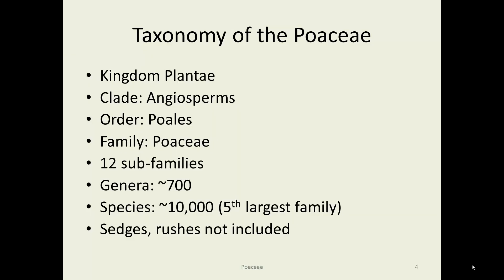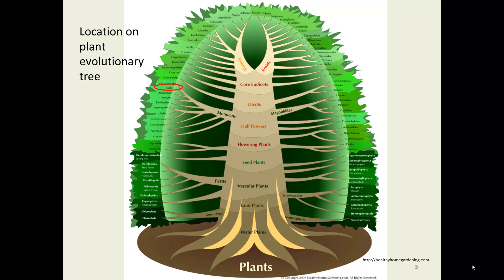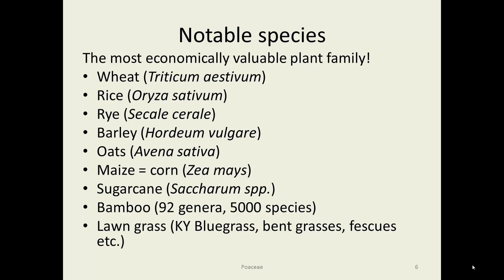The taxonomy of this family: it's a very large family, over 10,000 species, making it the fifth largest plant family. It does not include sedges or rushes. It is in the Poales plant order. The family Poaceae has 12 sub-families, which you can imagine given 700 genera and a lot of varying relationships. On the plant evolutionary tree, you can see where we are in the monocots — I've circled the Poales order on the left.